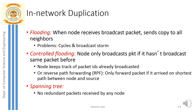This is the flooding technique. Flooding means a node receives a broadcast packet and sends a copy to all its neighbors. The problem with this approach is that if a graph has cycles — closed loops — duplicate packets keep circulating.